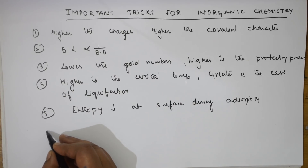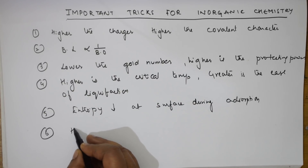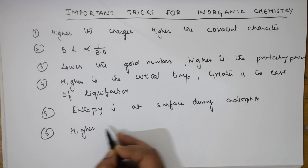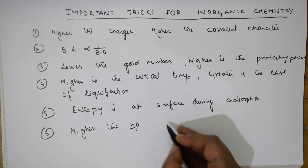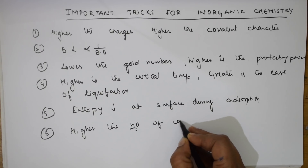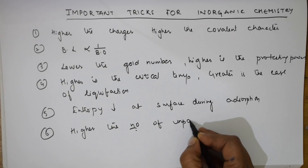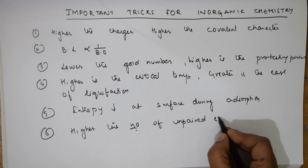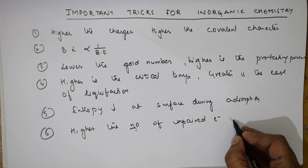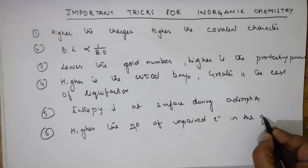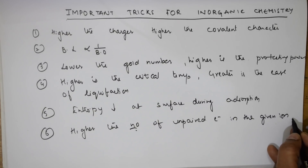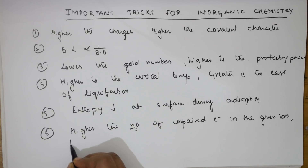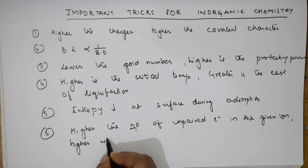Next important concept: higher the number of unpaired electrons in the given ion, higher will be the magnetic moment. I'm giving you the clue — it applies to a given ion specifically.